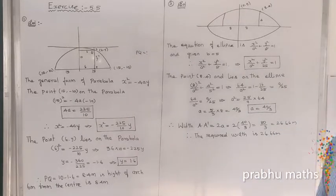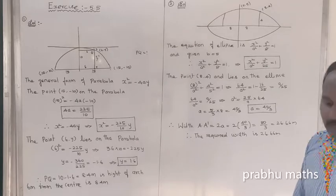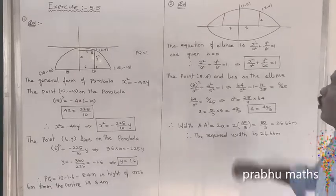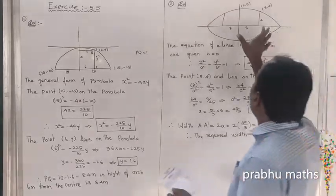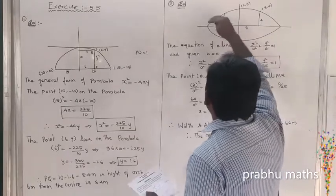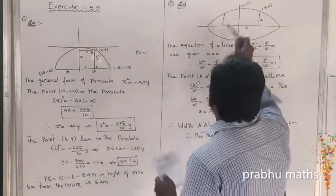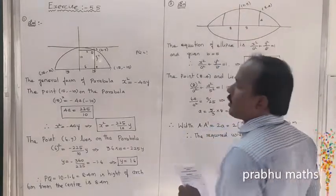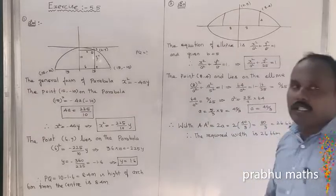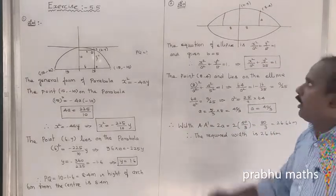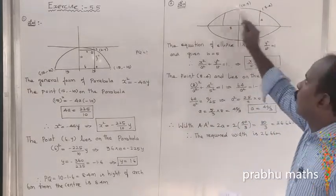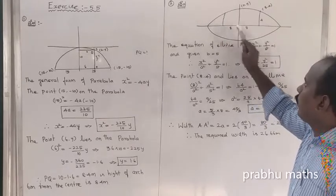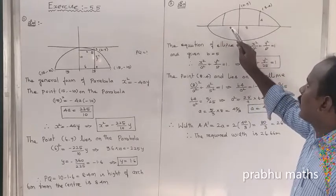The total width of the highway is 16 meters. This is the second problem. The tunnel has an elliptical shape. In the elliptical shape, if you consider the full width as 16, we need to find how wide the road must be open.